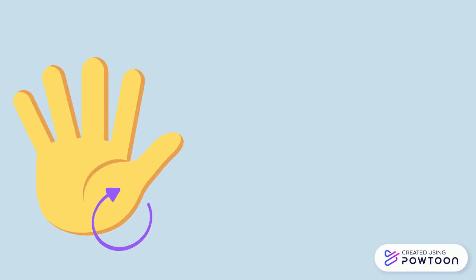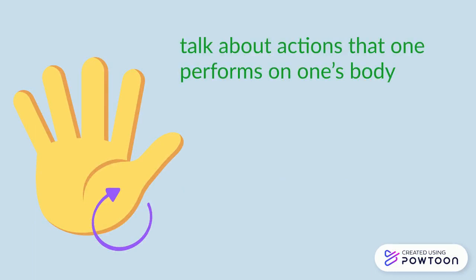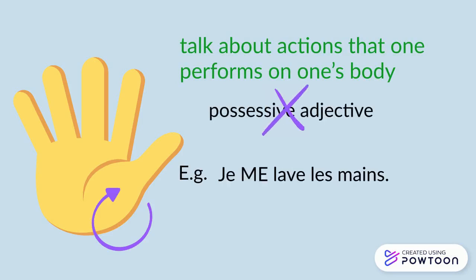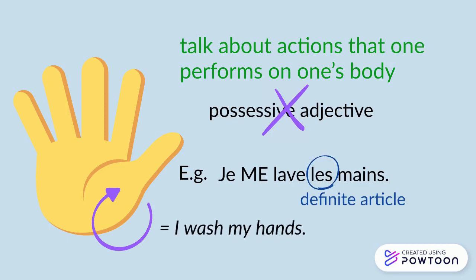In French, reflexive verbs are also used to talk about actions that one performs on one's body, whereas English uses the possessive adjective instead. For instance, je me lave les mains — notice that we use the definite article — meaning 'I wash my hands.'